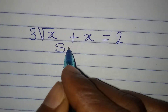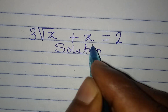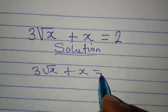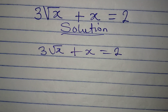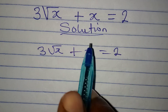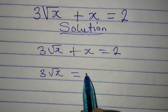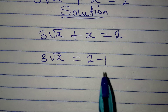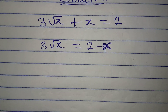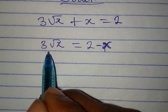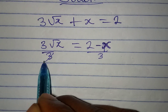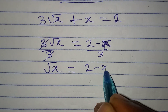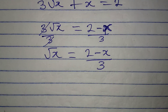Let's solve this problem: 3√x + x = 2. First, take x to the other side so we have 3√x equal to 2 minus x. Then divide both sides by 3 so that √x is alone. This gives us √x = (2 - x) / 3.